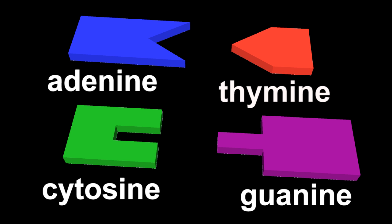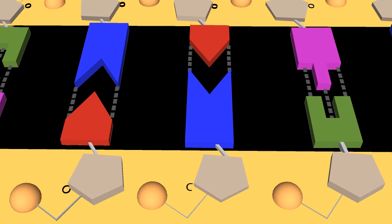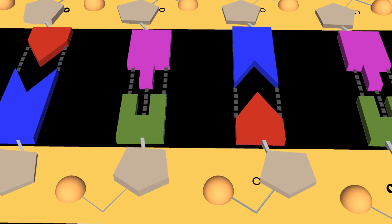Second, the discovery in 1950 that pairs of these bases which form the subunits or nucleotides of DNA strands occur in equal amounts.